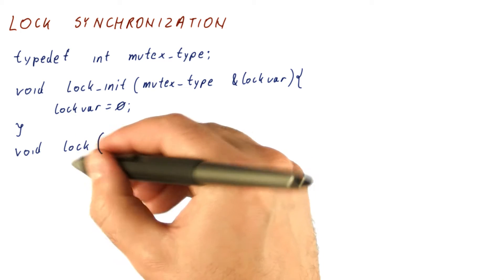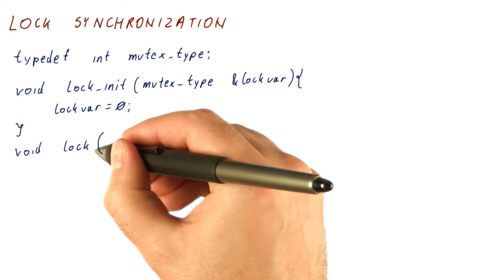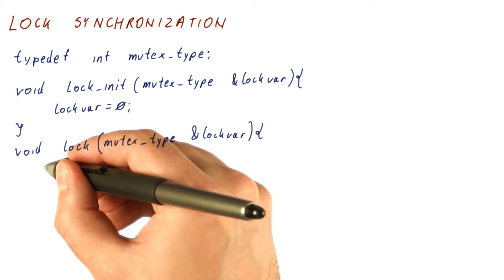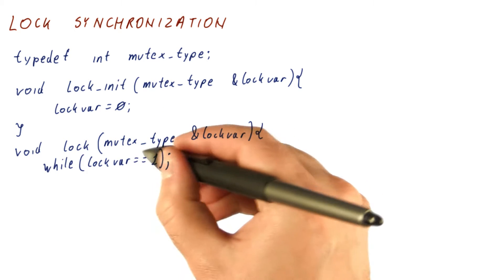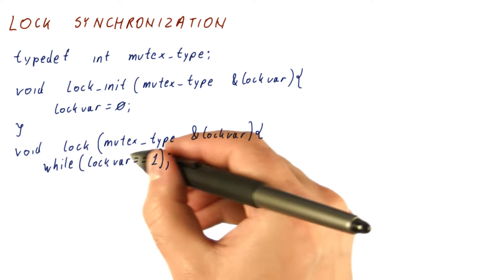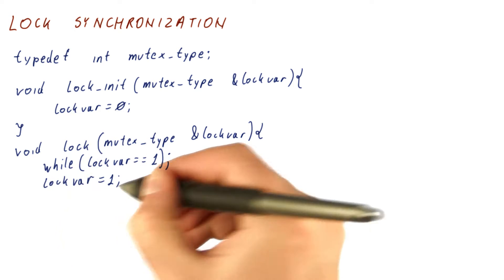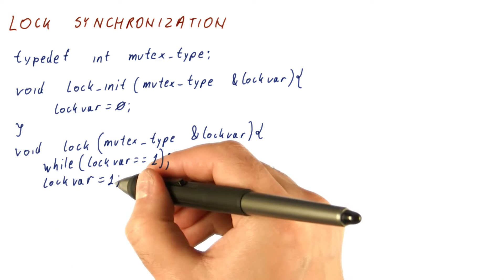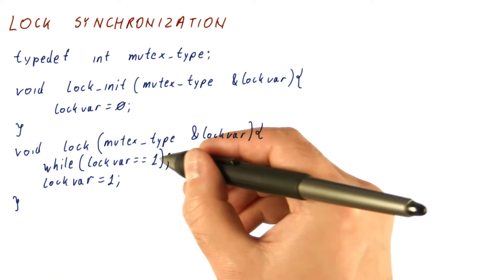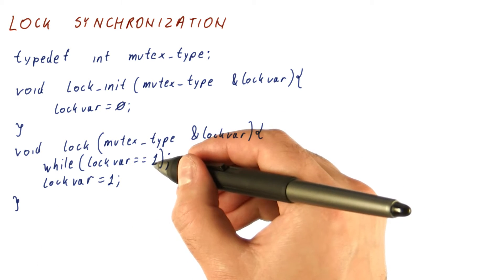And now the lock function, the function that tries to acquire the lock and make sure that we're alone in doing that, will do something like this. It will spin as long as the lock var is one, which is the locked value. Once it sees that lock var is zero, not one, it's going to put one in that value to mark it as locked. Then we can enter the critical section, because others will now see our one and spin there.